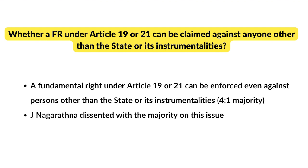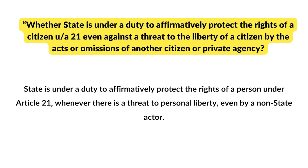The third issue was whether the state has a duty to affirmatively protect the rights of citizens under Article 21 even against a threat to liberty by the act or omission of another citizen or private agency. The question was that since the state is duty-bound under Article 21 to be a protector of life and personal liberty, does that also mean they must protect citizens from threats from another citizen or private agency? Again, by a 4:1 ratio, the court held that the state is under a duty to affirmatively protect the rights of persons under Article 21 whether the threat to personal liberty comes from a non-state actor. This is one of the very few judgments where the court held Articles 19 and 21 to be enforceable against private persons.